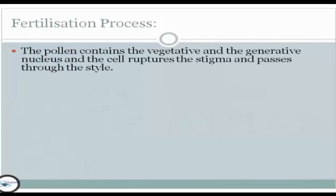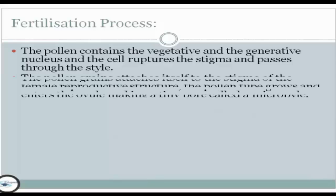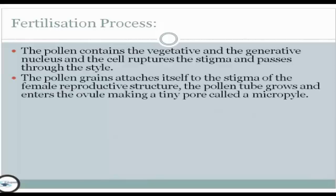The pollen contains the vegetative and generative nucleus. The cell ruptures the stigma and passes through the style. The pollen grain attaches itself to the stigma of the female reproductive structure. The pollen tube then grows and enters the ovule through a tiny opening called the micropyle.